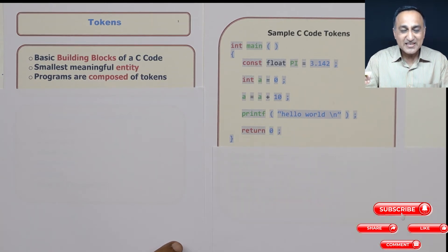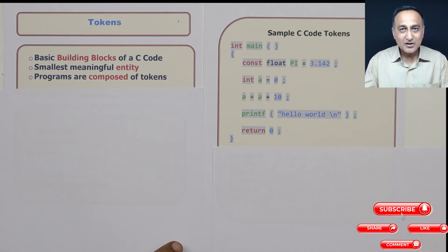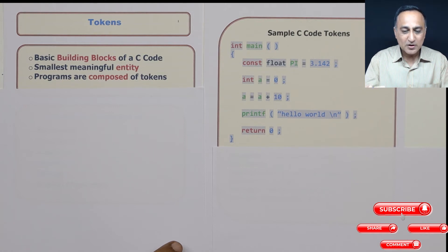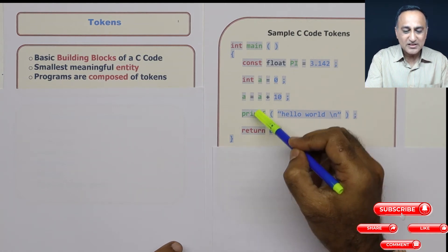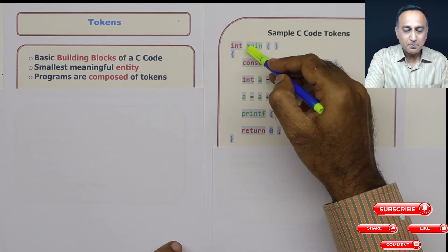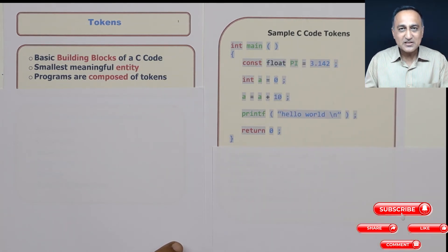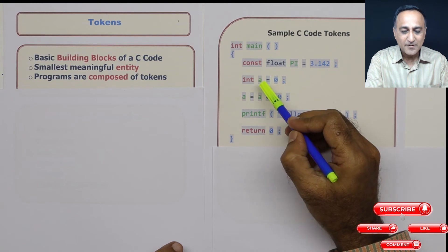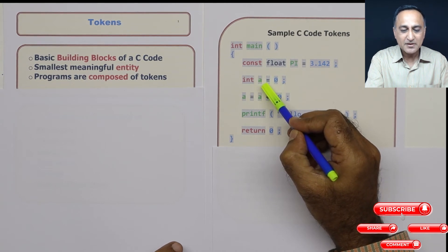These are the second types of components or tokens in a C program. All these - pi, a, printf, main - these are names called as identifiers because you're trying to identify something by giving a name. For example, a memory location is identified by the name a.